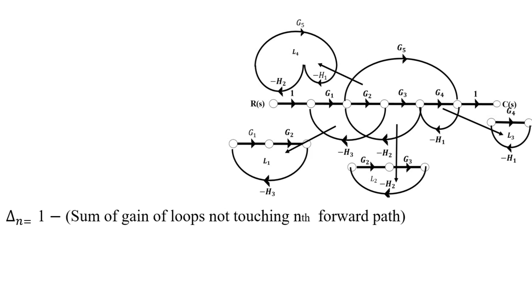So what is delta1 and delta2? We can generalize this concept as: delta_n equals 1 minus the summation of gain of loops not touching the nth forward path. In this case, delta1 is 1 minus the sum of gain of loops not touching the first forward path. But here, all loops are touching this first forward path.